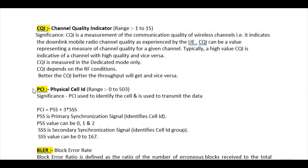The next parameter is PCI, which stands for Physical Cell ID. Its range is 0 to 503. PCI is used to identify the cell and to transmit data. PCI is a combination of PSS and SSS — Primary Synchronization Signal and Secondary Synchronization Signal. The PCI formula is: PCI = PSS + 3 × SSS, where PSS values range from 0 to 2 and SSS values range from 0 to 167.